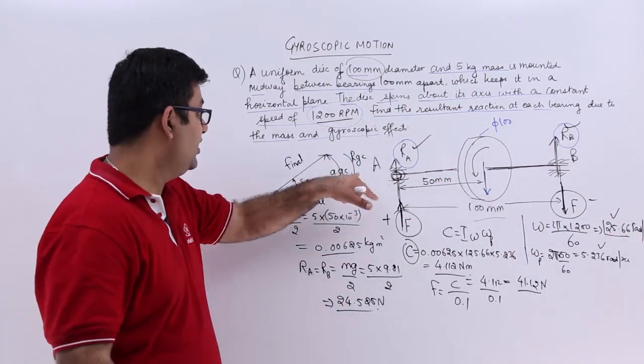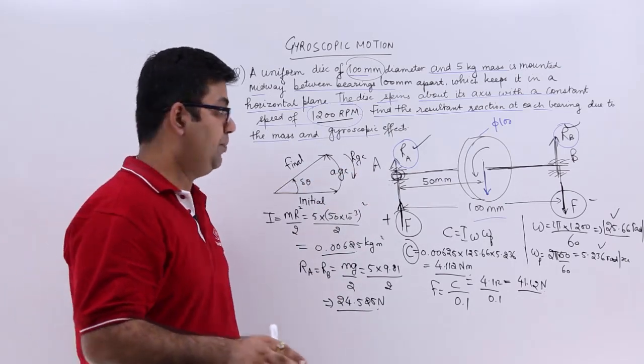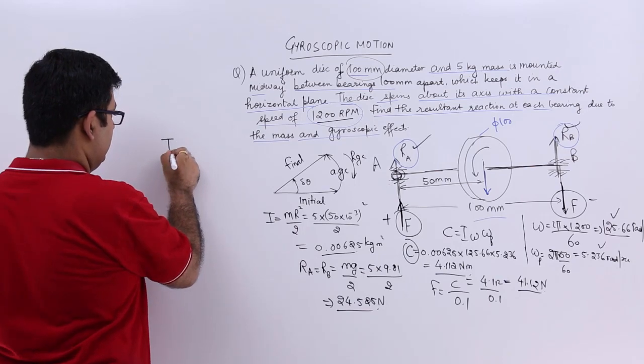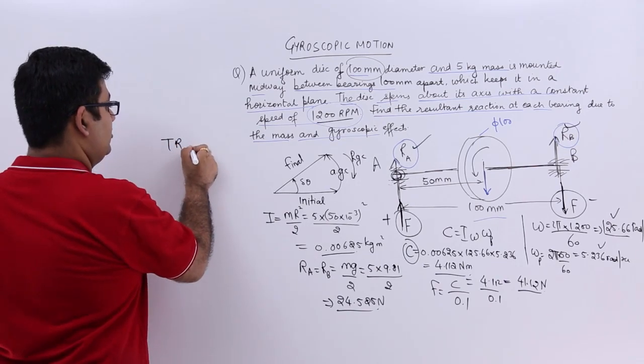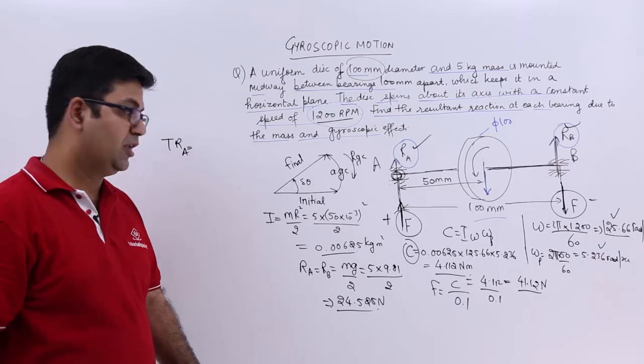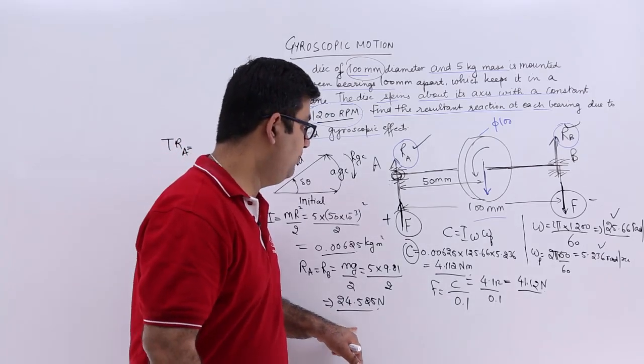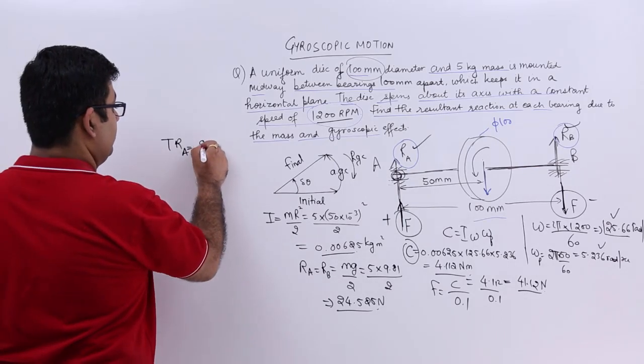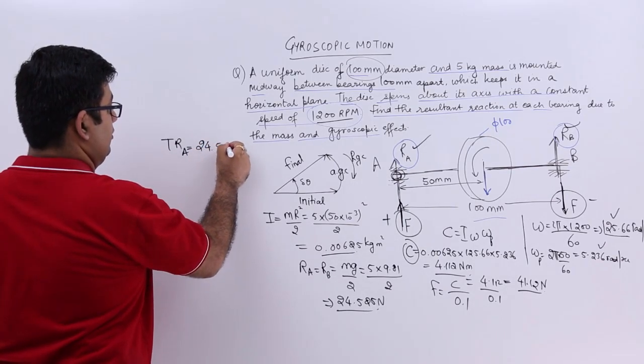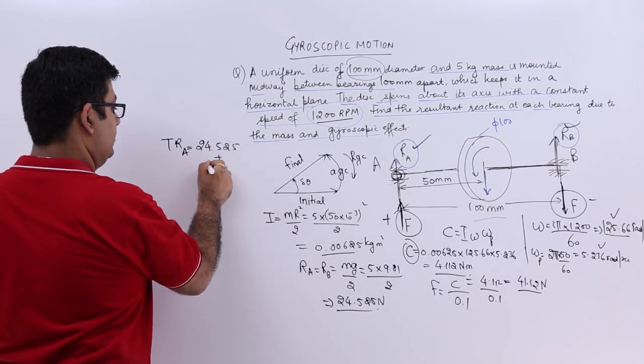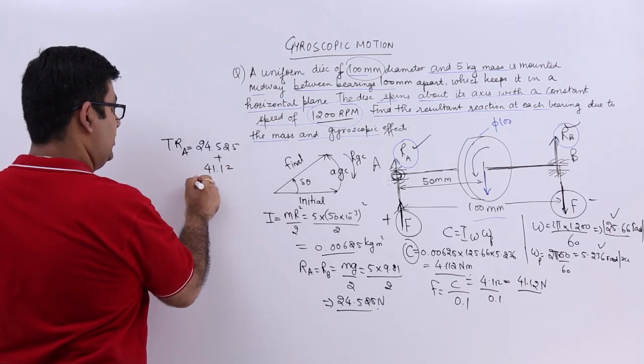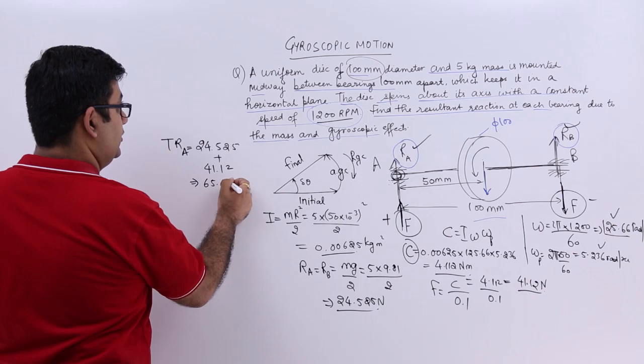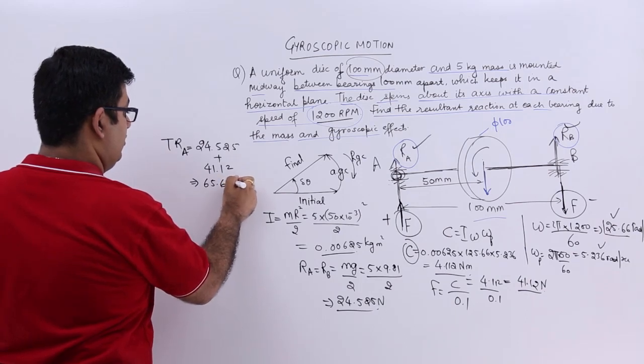Now the total reaction at A would be R_a + F, so 24.525 + 41.12. This would give you 65.645 newtons. So this is the total reaction at bearing A.